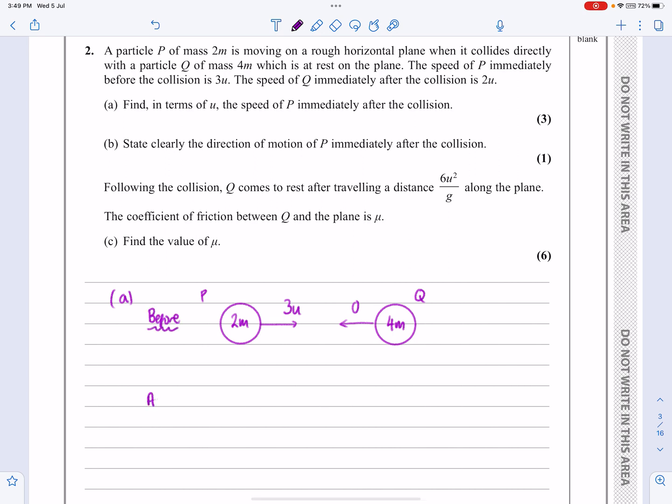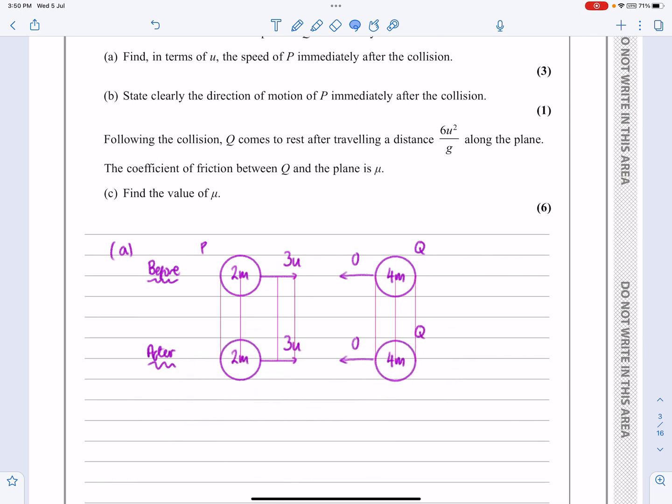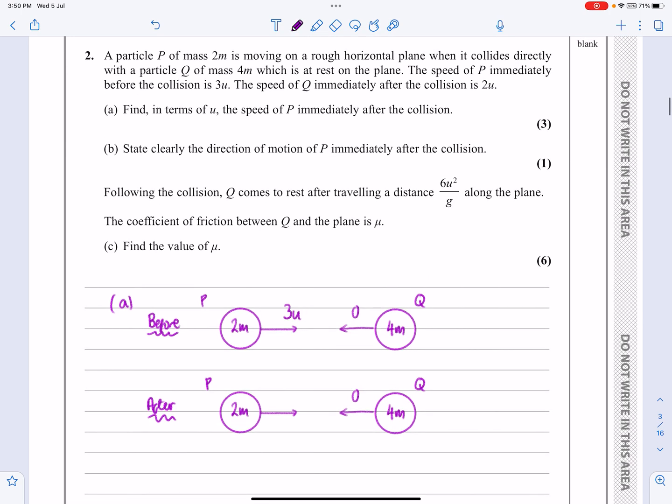So what's going to happen afterwards? Afterwards, we've got that P is now moving with a speed of V - we don't know what that one actually is - and the other one is going to move off with a speed of 2u.